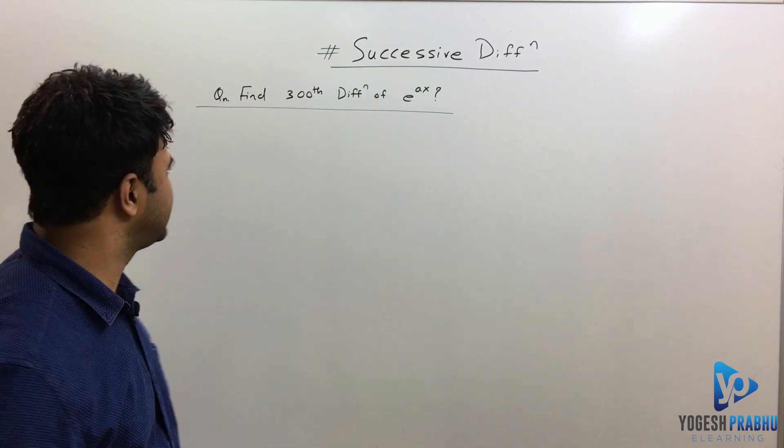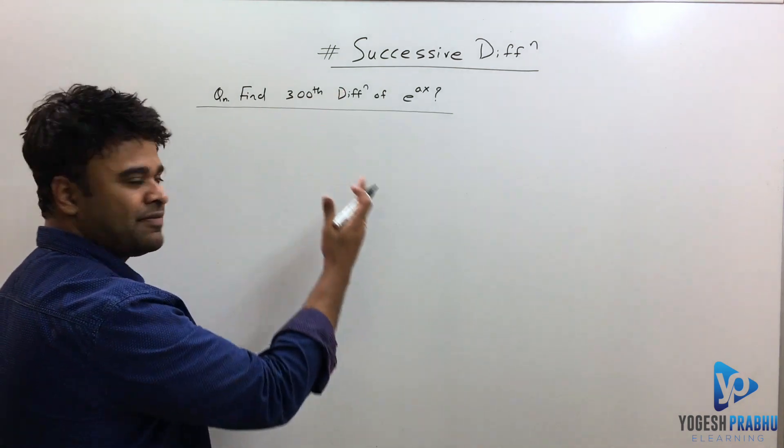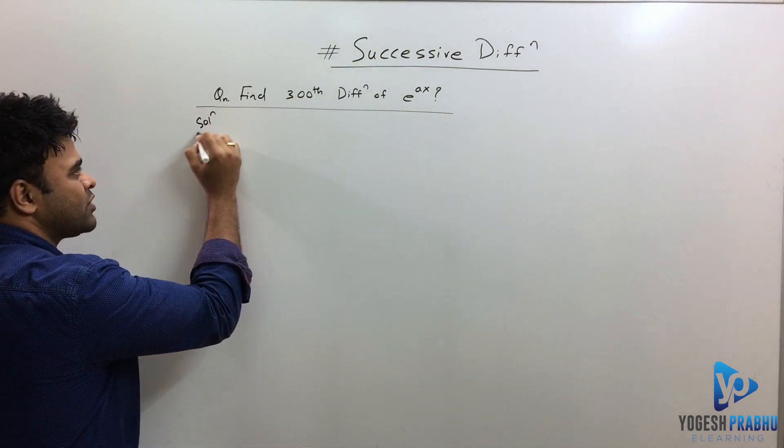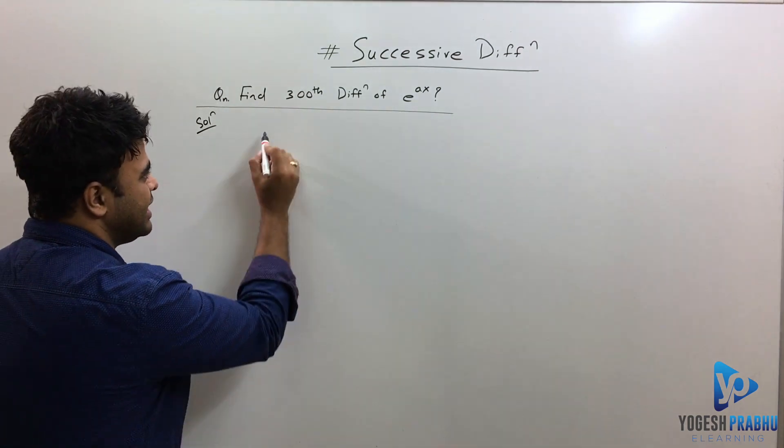If you see here, I want to find the 300th differentiation of e raised to ax. So the solution is like this: let me assume this, whatever is given, e raised to ax as y.